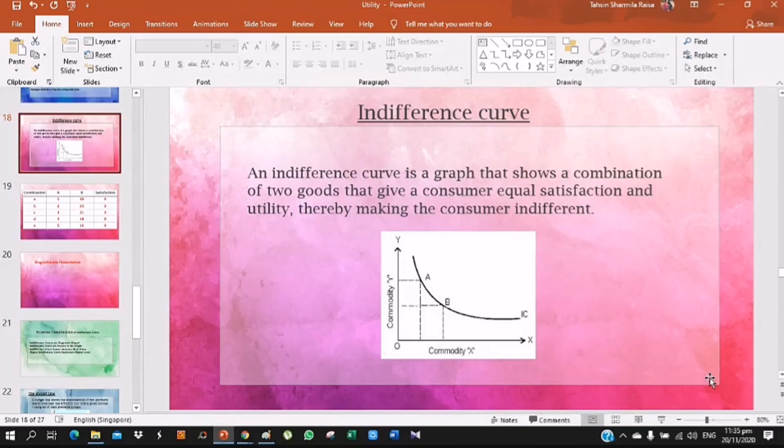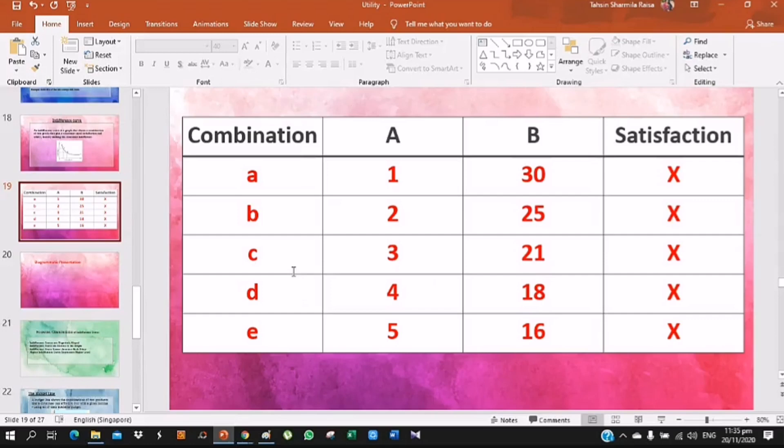Indifference schedule is a tabular statement showing different combinations of two goods which represent equal satisfaction to the consumer. Combinations a, b, c, d, e - if one unit of good A and 30 units of good B are consumed, you get a certain satisfaction.